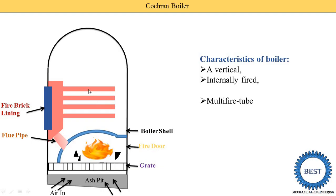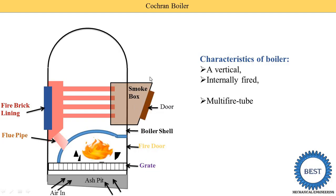The gases pass through these tubes, and water surrounds the tubes. The flue gases coming out from the fire tubes are collected in one smoke box, and this smoke box is connected with the chimney. One door is provided on the smoke box for easy cleaning. These are the major parts of the Cochrane Boiler; some mountings are also installed.